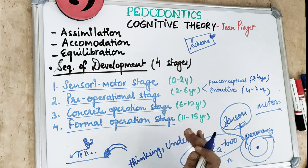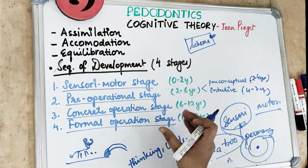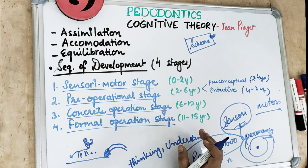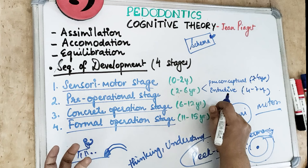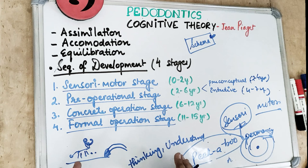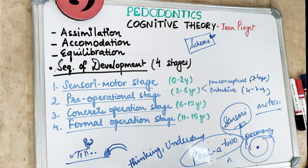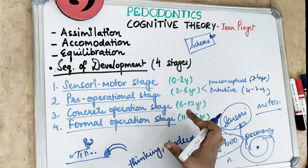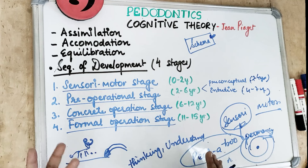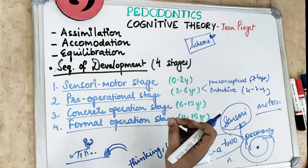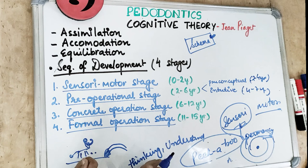The concrete operational stage is from 6 to 12 years. The child now thinks about concrete things that exist in front of them, and their thinking has become logical. They can understand others' viewpoints and use mental operations like addition or subtraction. They also understand qualities and shapes of objects. Concrete instructions like brushing habits should be taught at this stage. The child can look in the mirror to see what is being done in the mouth, gets involved in treatment, and can be allowed to hold the suction or handle non-sharp instruments.